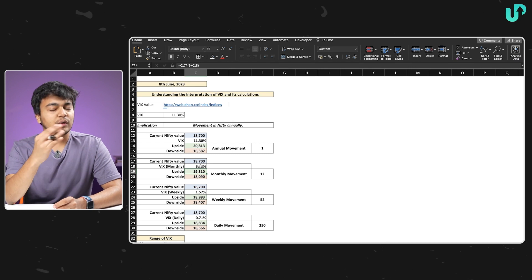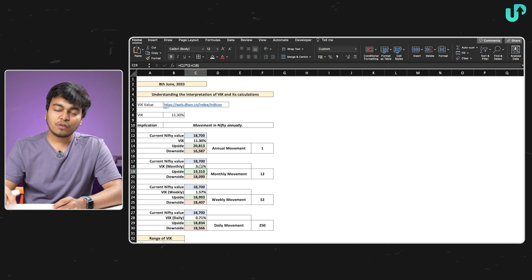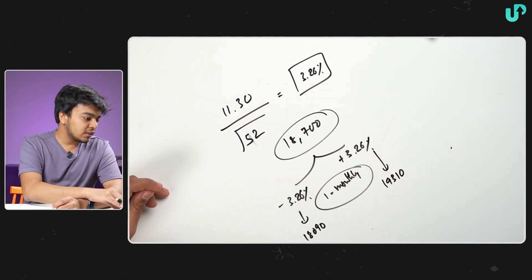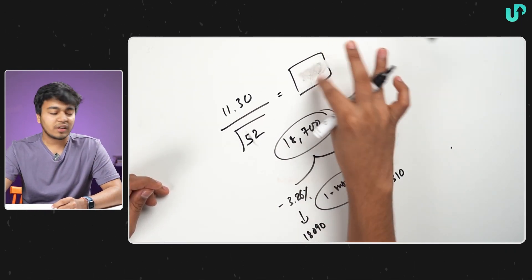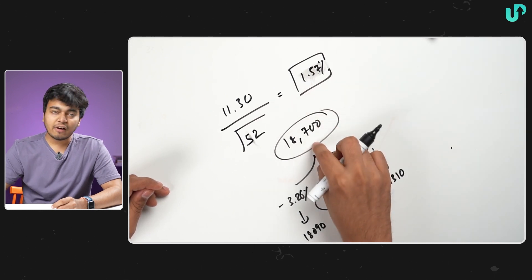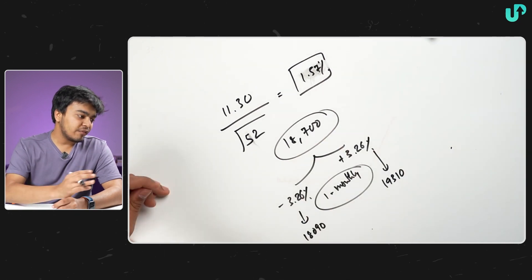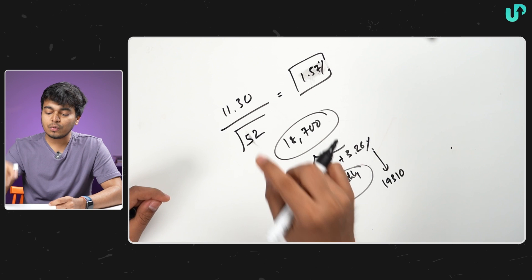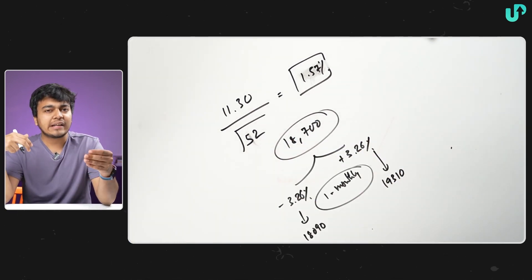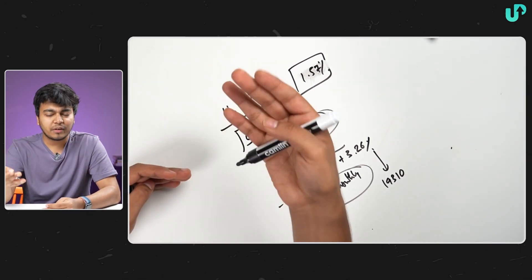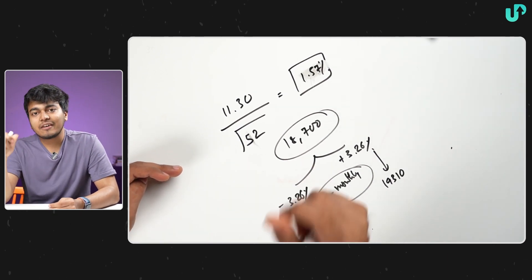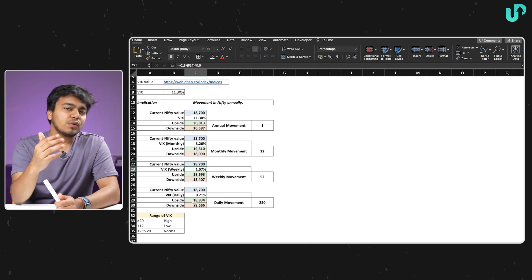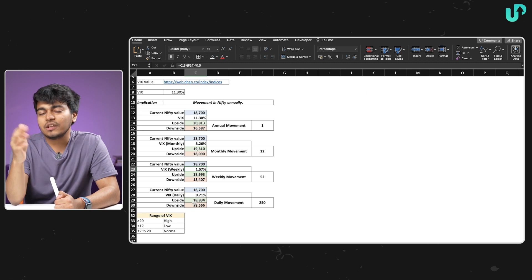In the same way, you can do it for weekly and daily timeframes. For weekly, instead of dividing by the square root of 12, you divide by the square root of 52.5 because one year has 52 weeks — giving approximately 1.57%. So the Nifty at 18,700 can make a movement of 1.57% either on the upside or downside in a weekly timeframe. For daily, divide by the square root of 250 to 252 trading days, which gives 0.71% — allowing you to figure out the daily volatility in the index.